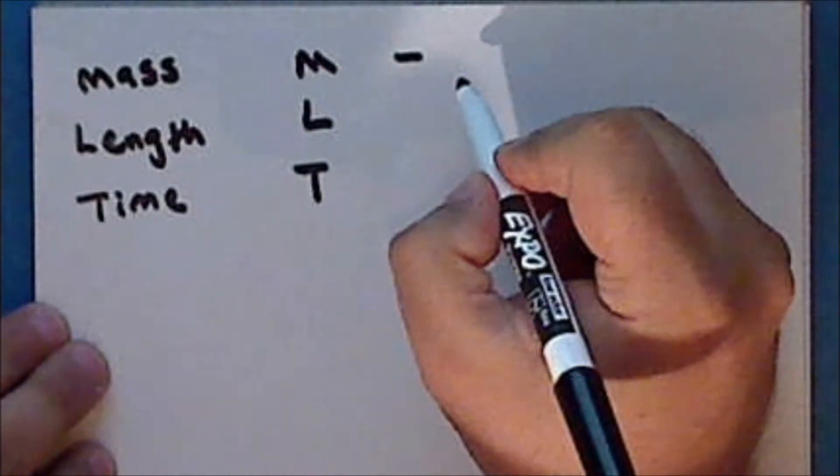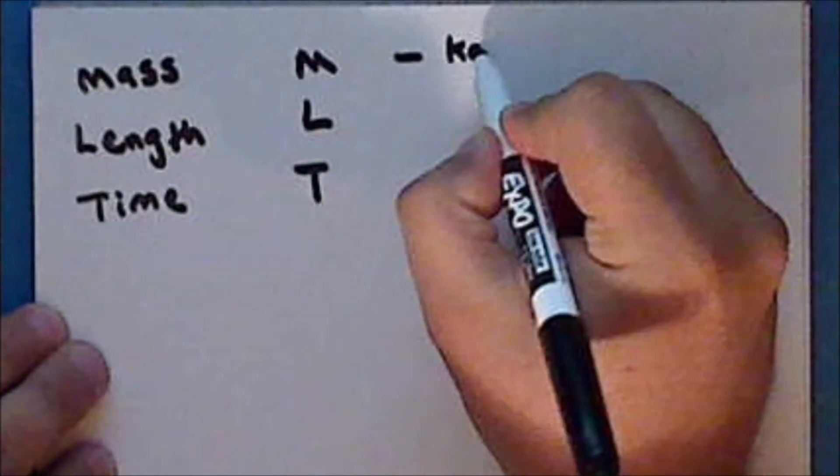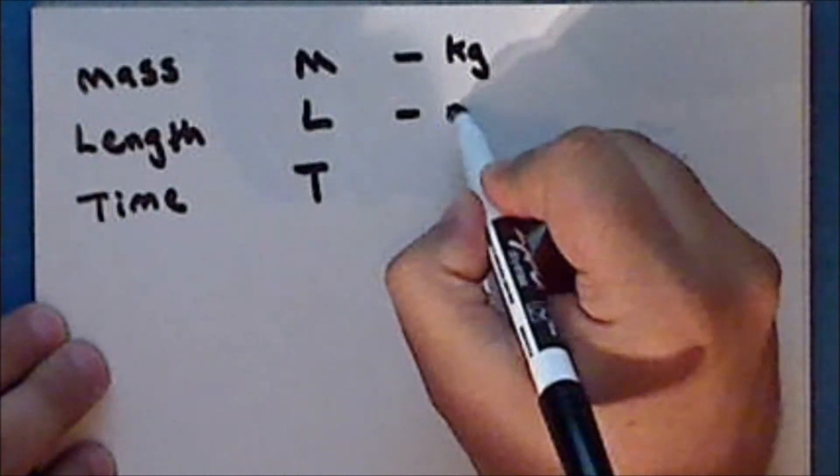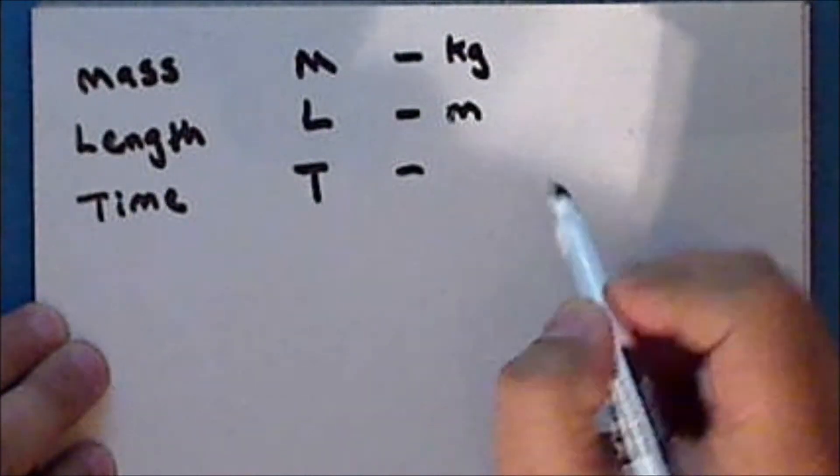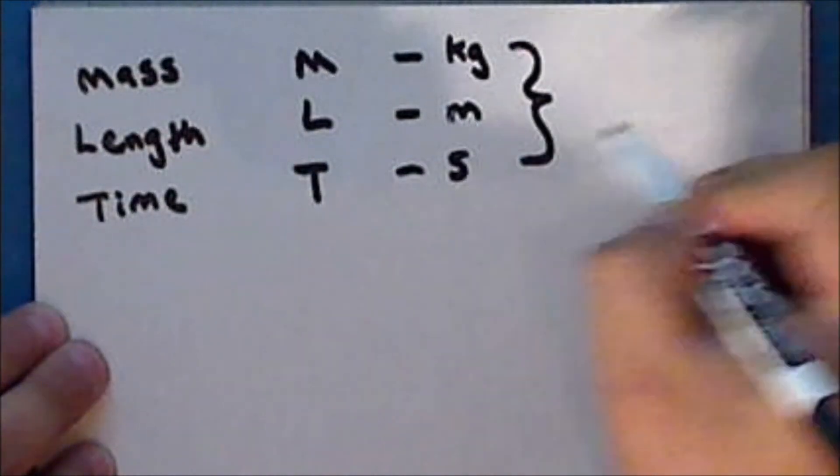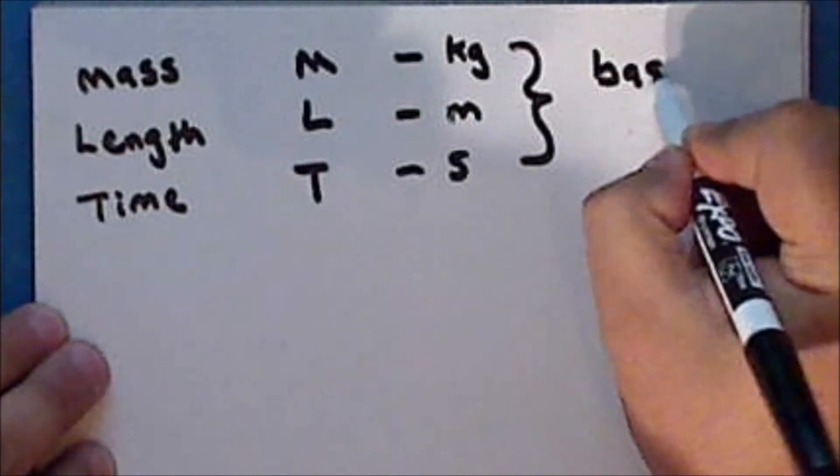The SI unit for mass is the kilogram. The SI unit for length is the meter. And the SI unit for time is the second. And we refer to these as base units.